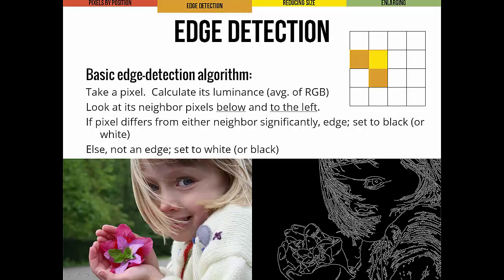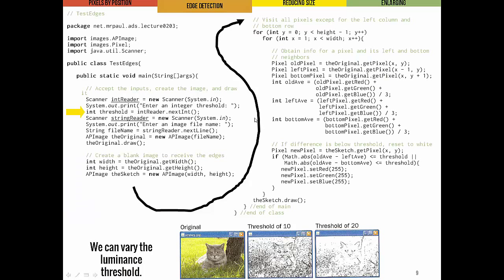The program displays both the original image and the new edge-detected image. We set the threshold for the luminance using an int threshold read from a scanner object. Key things to see: we get all inputs and set up images, create a blank image to receive the edges, start visiting all pixels one by one with our nested loop structure, get the original pixel, the left pixel, and the bottom pixel, then calculate luminance and do our comparison. Finally, we draw the resulting sketch image.